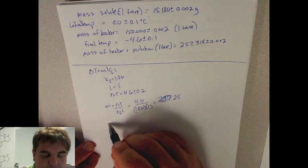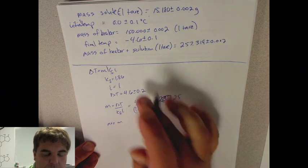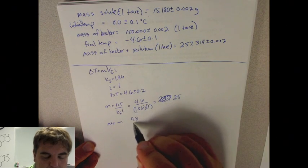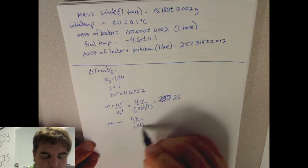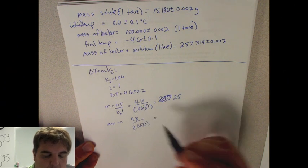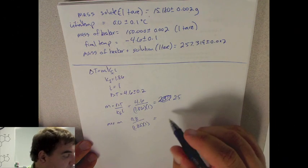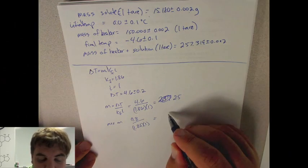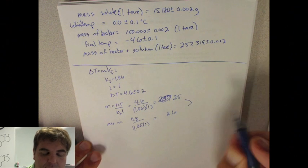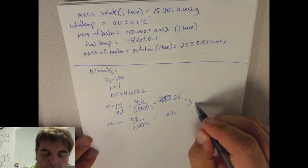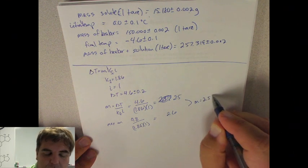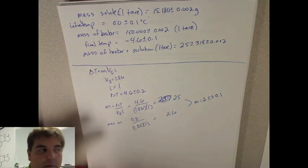So now we need to do the max. In that case, we'll do 4.8 by 1.86 by 1. And so that then will equal 2.6. So that means that our molality is 2.5 plus or minus 0.1 molal.